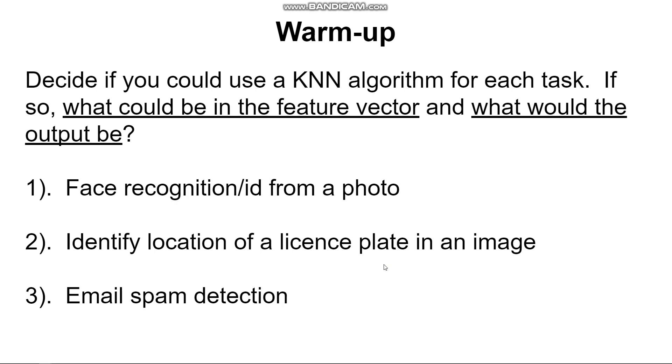However you could modify the task to be able to apply k-nearest neighbor. So if you don't care about the exact location in the image you could break the image down into a relatively small number of regions. So imagine breaking it up into like a three by three subgrid. So now you could just say is there a license plate present in the upper left, the center top, the right top, the middle left, and so on. And so that's only nine categories. You could also have a tenth category which is not present anywhere. And so now k-nearest neighbor could apply because it would still be a categorization task with a relatively small number of output categories.